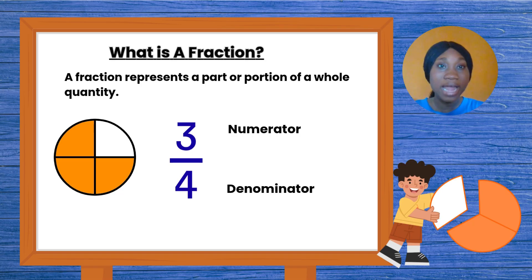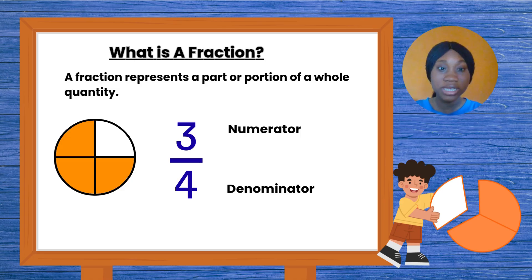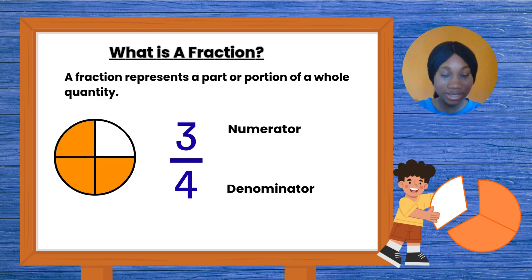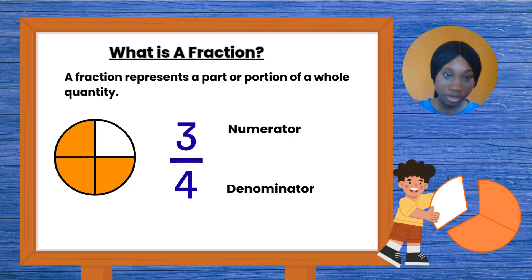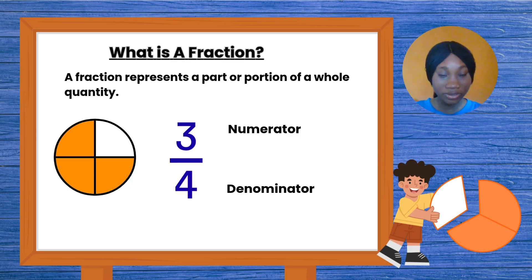For example, I might have an orange — a whole orange — and I want to share it for myself and my sister. So I divide that orange into two slices: one half for me, one half for my sister. And I have one over two, one over two. So one over two is what we call a fraction.